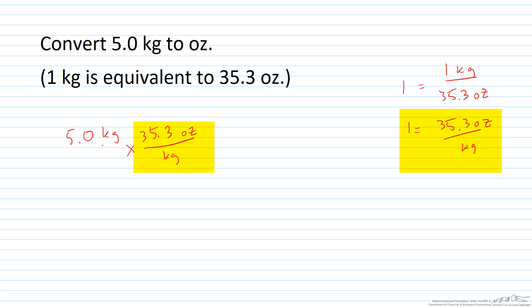Again, you're arranging such that the units you're trying to convert from will cancel out. So we have kilograms cancels in the top and bottom. And we're left with ounces. And I think it's about 177 ounces. Alright, so 5 kilograms is equal to approximately 177 ounces.